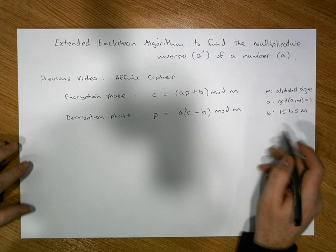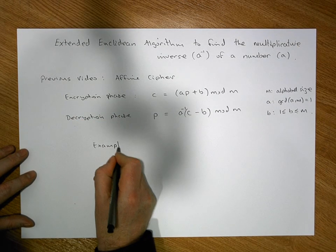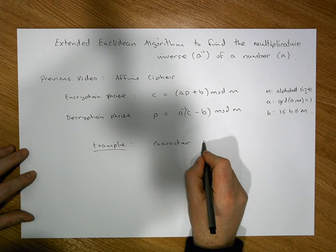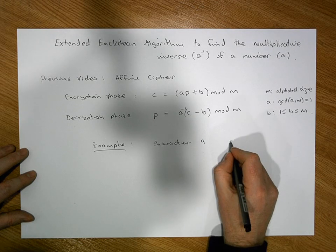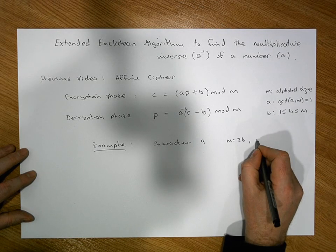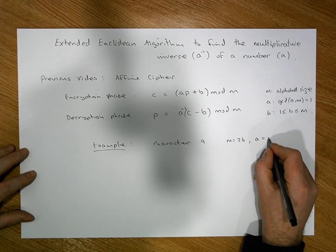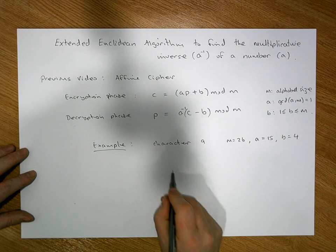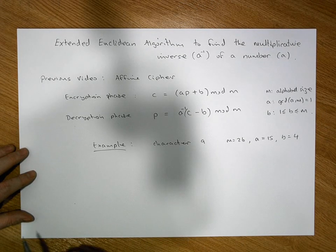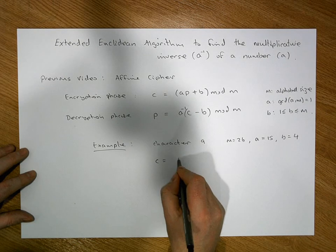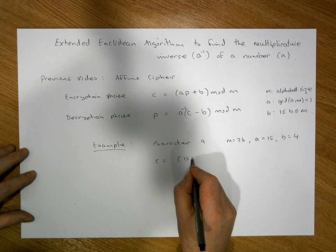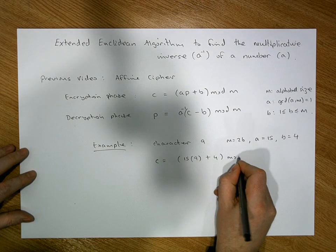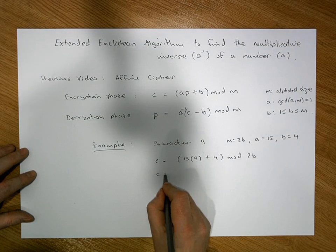Let's work through an example. Say we have a character represented as the number 9, and m equals 26, a equals 15 — a number relatively prime to 26 — and b equals 4. The encryption of the letter 9 would be c equals 15 times 9 plus 4, modulo 26.